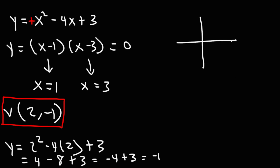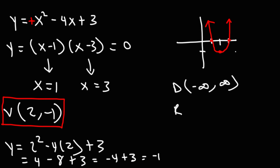We can draw a rough sketch by plotting the vertex at 2 comma negative 1, knowing it opens upward. We also know the intercepts at x equals 1 and x equals 3. The domain, as always, will be negative infinity to infinity for a quadratic function. For the range, we can see the lowest y value is negative 1 and the highest is infinity, so we go from negative 1 to infinity.